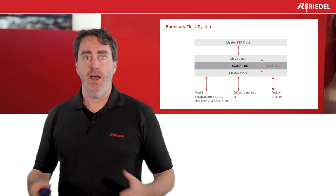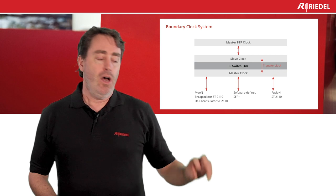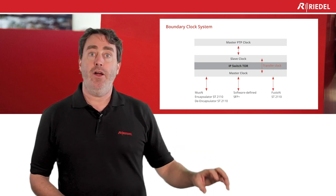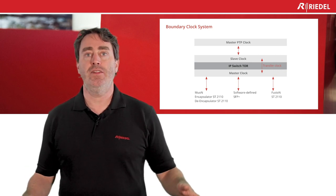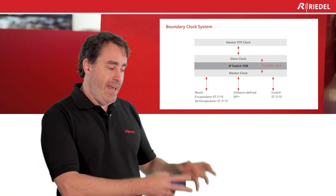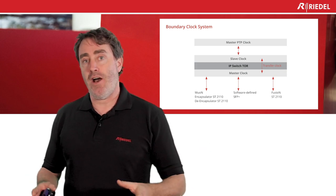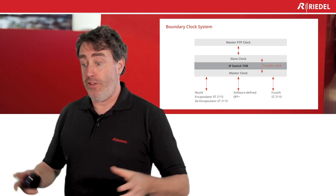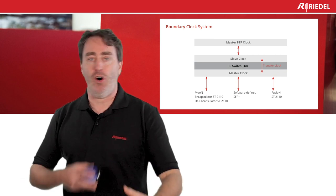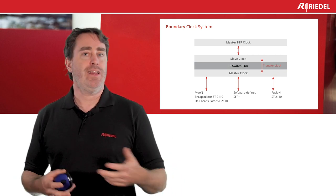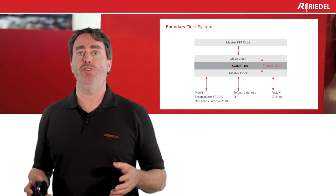How this is done: the grandmaster talks to the leaf switches. The leaf switches are slaves to the grandmaster, but masters to the devices connected to them. So the grandmaster communicates with the switches, and the switch itself is a master to all the devices connected to it. In that case, you minimize all the delay, because you don't talk all the way to the grandmaster — you talk to your local switch.